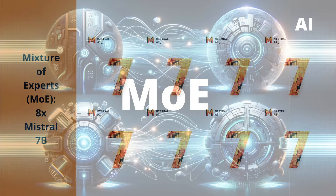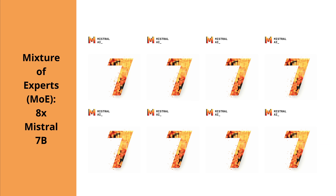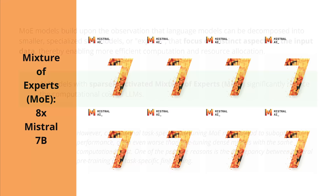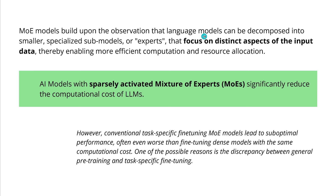Imagine you have eight different Mistral 7B LLMs and you want to combine them into a mixture of experts. How would you do this? The mixture of expert model is built upon the observation that LLMs can be decomposed into smaller specialized expert systems that only focus on distinct aspects of the input data. This enables more efficient computation and resource allocation, especially with parallel GPU computing, significantly reducing the computational cost of large language models.